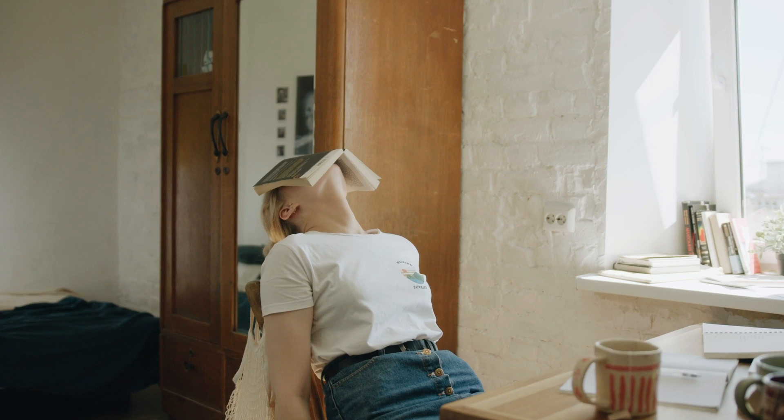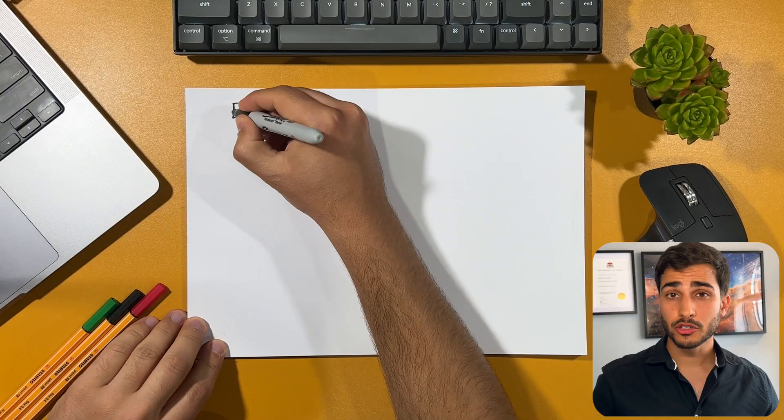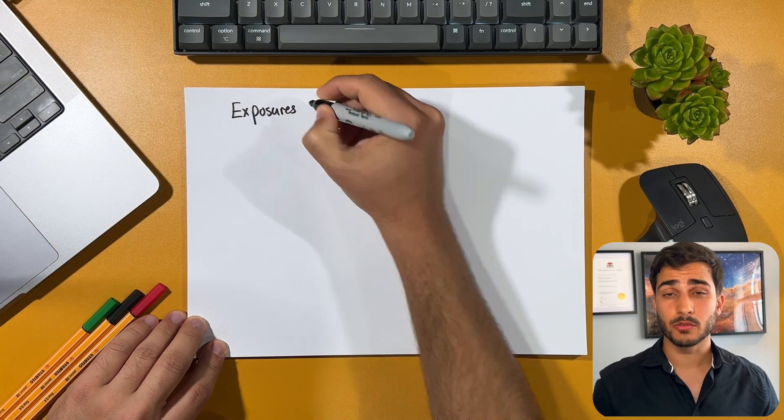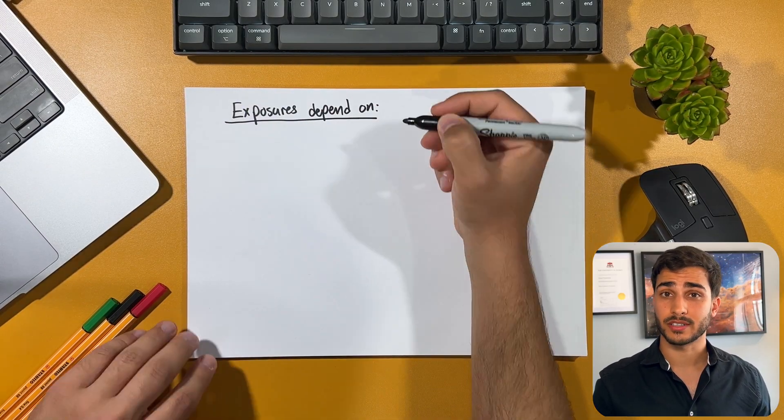I see a lot of students that get overwhelmed because they think they need to memorize the entire exposure chart from head to toe or from limb to limb. And that's probably the single most inefficient thing you can do — the exposure you give can vary with so many different factors, it's not even funny.